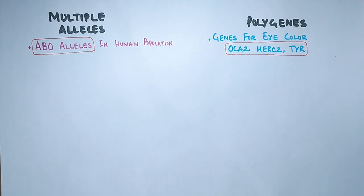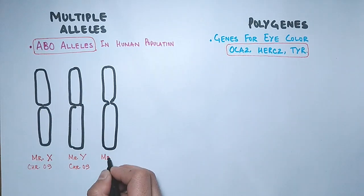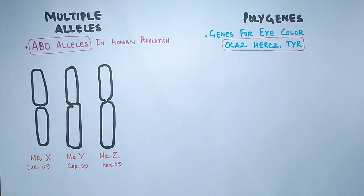Let's see the ABO multiple alleles first. Suppose we have three chromosomes from three individuals from human population. We have Mr. X, or you can say Miss X, then we have Mr. Y and Mr. Z. From these individuals we have taken chromosome number nine, which is having ABO alleles on its Q arm.